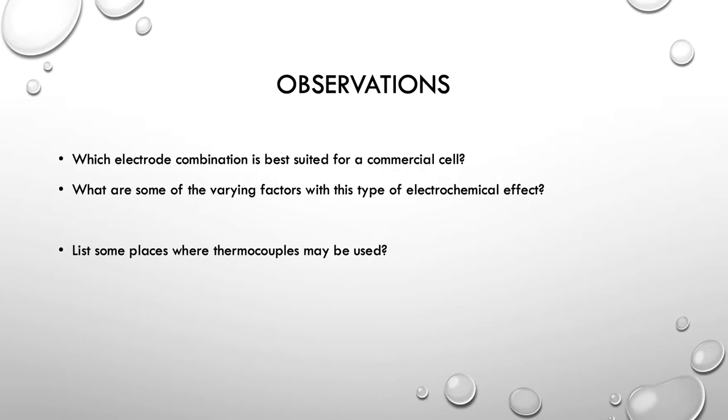What are some of the varying factors with this type of electrochemical effect? Well, the amount of salt that you've got in the water. There comes a point where you can't get any more salt in the water. The water saturates with salt. So that's a limiting factor. It's also terribly reliable on temperature. On a cold day, you're not going to get as much out of it as you would on a warm day. So there's some problems with temperature in this kind of wet cell arrangement.